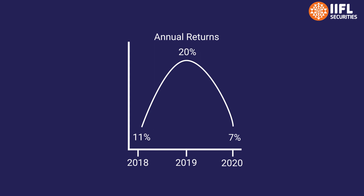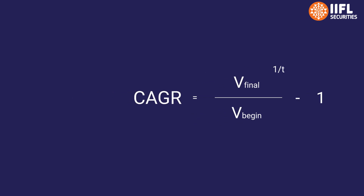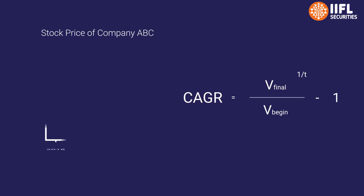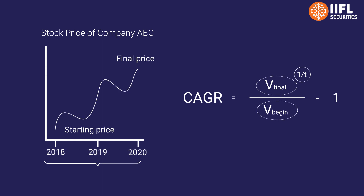This is the formula for calculating CAGR. To calculate CAGR, first take the final value of the asset and divide it with its starting value. In the exponent, divide 1 by the number of years, then subtract the answer by 1.